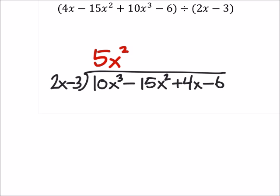We do need to change those signs, but only after we multiply. And that way we know what we're taking away from whatever we had. So, 5x squared times the 2x is 10x cubed. And then I've got 5x squared times the negative 3, which is the negative 15x squared.